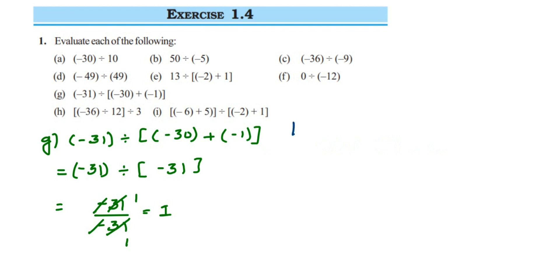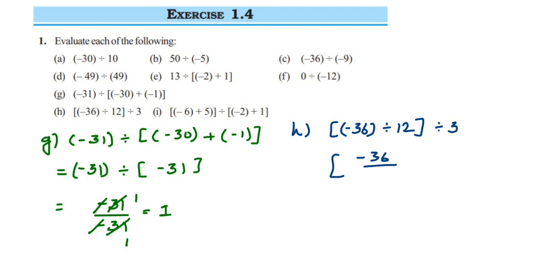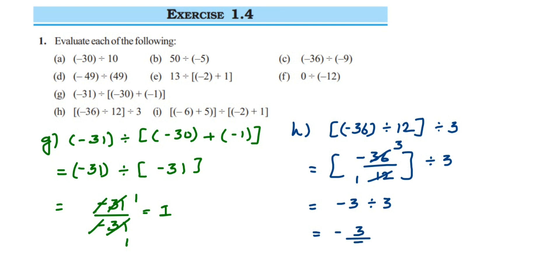Problem h: (minus 36 divided by 12) divided by 3. Solve the bracket first: minus 36 divided by 12. Using the 12 times table — 12 threes are 36 — we get minus 3, because there's one negative sign. Now divide by 3: minus 3 divided by 3. The 3s cancel and there's one negative sign, so the answer is minus 1.